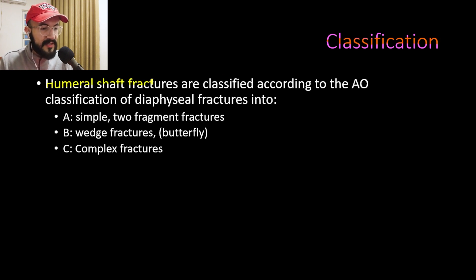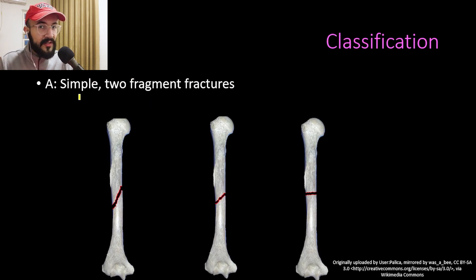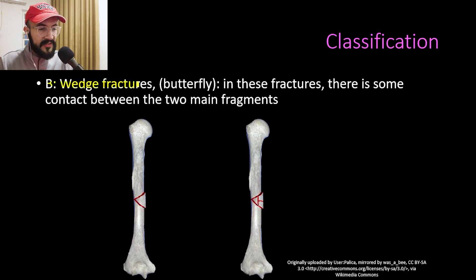Humeral shaft fractures are classified according to the AO classification of diaphyseal fractures into three groups: A, B, and C. In Group A we have the simple two-fragment fractures — the spiral humeral shaft fracture, the oblique humeral shaft fracture, and the transverse humeral shaft fracture.